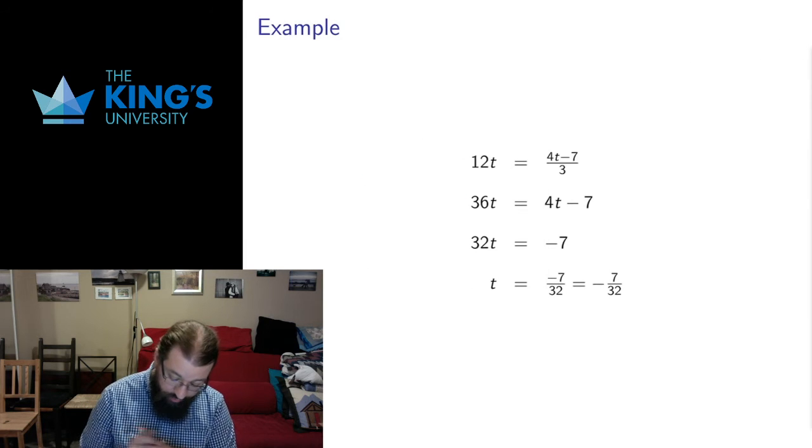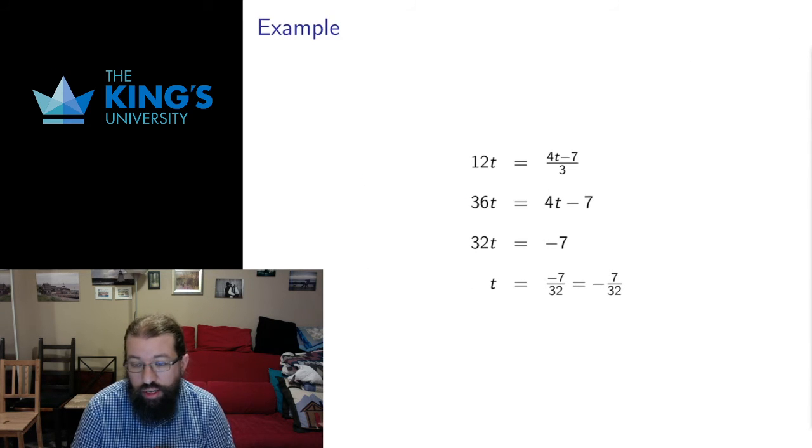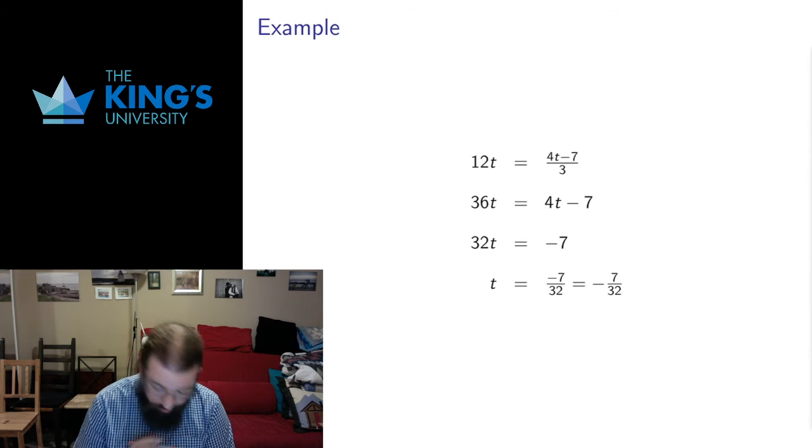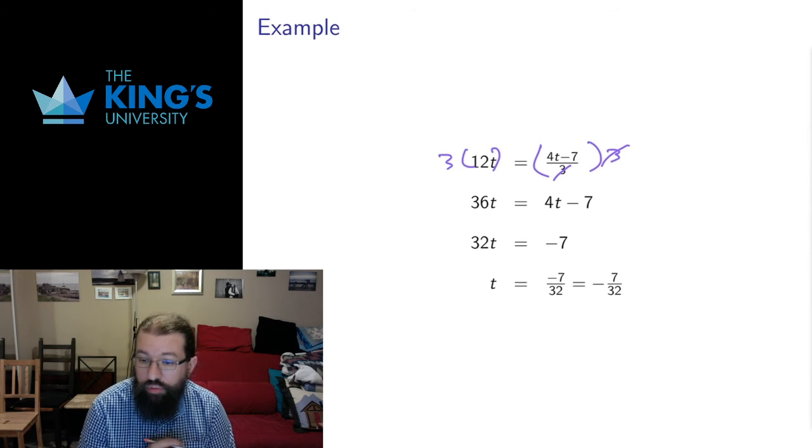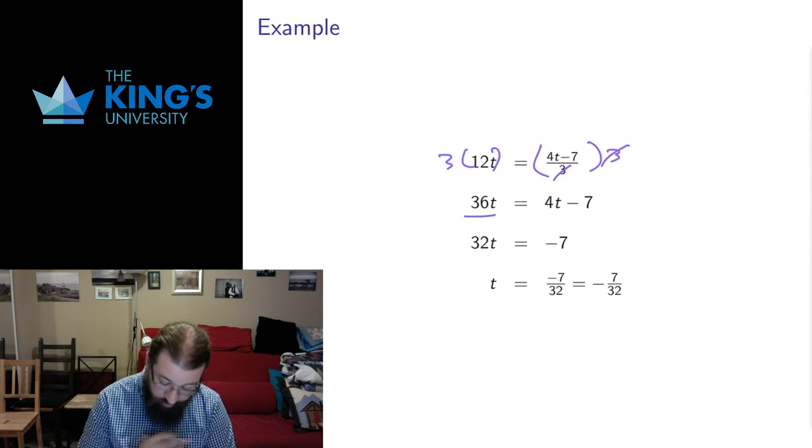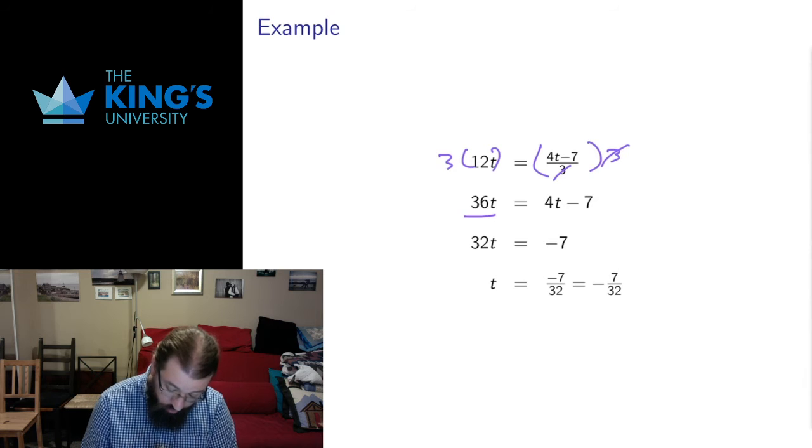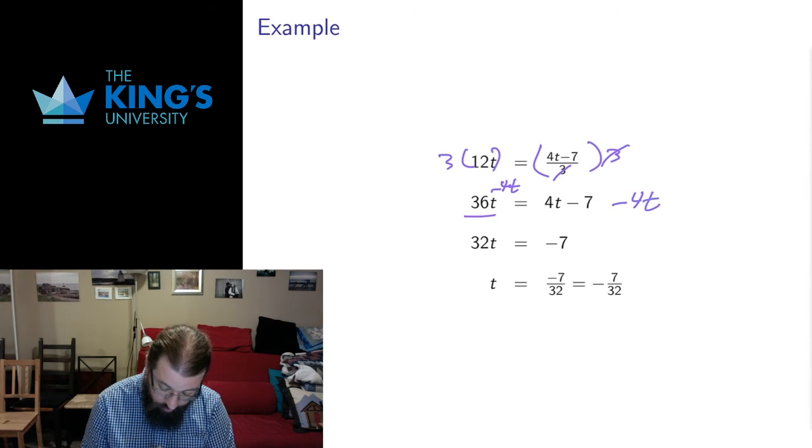One last example. Here I have this division by 3. I'd like to get rid of that. So the first thing I'm going to do is multiply both sides of the equation by 3. The 3's will cancel off on the right. 12 times 3 is 36.